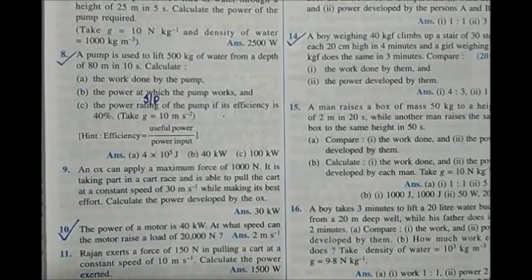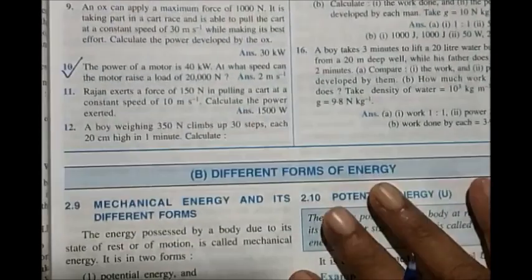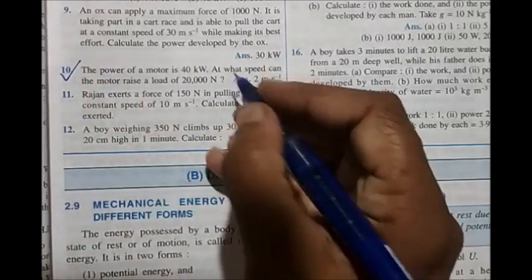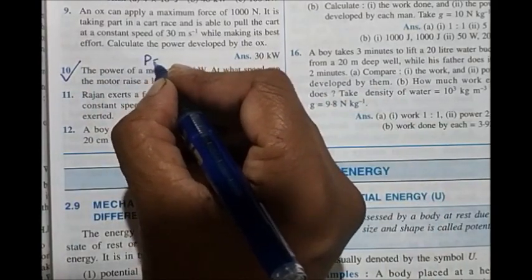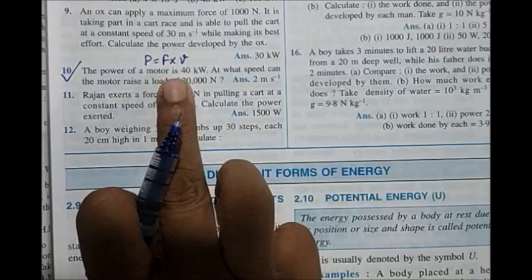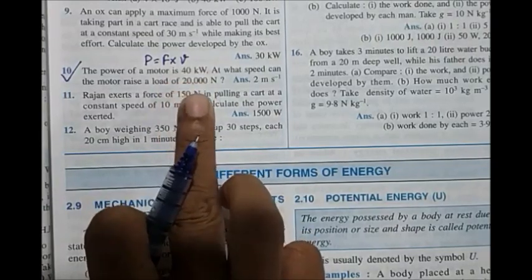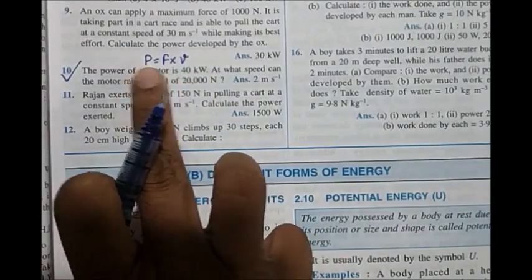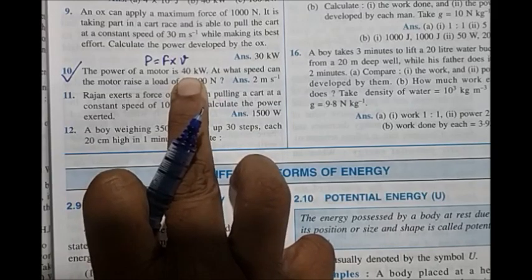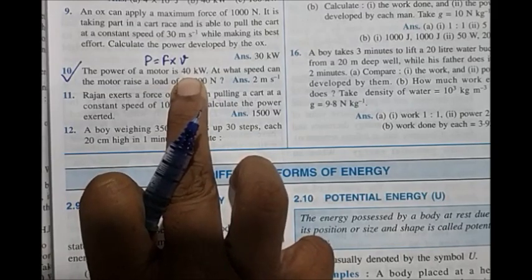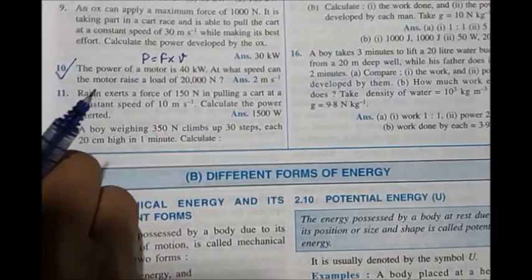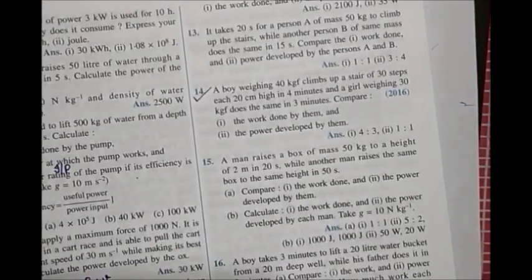Numerical 10 is based on the formula P = force × velocity. Force and power are given; convert kilowatt to watt (it becomes 40,000 watt), then solve the numerical.